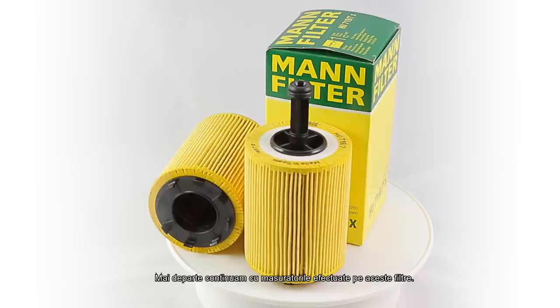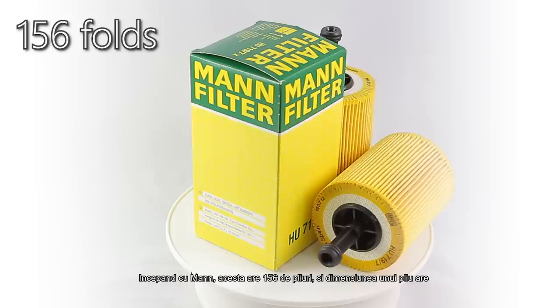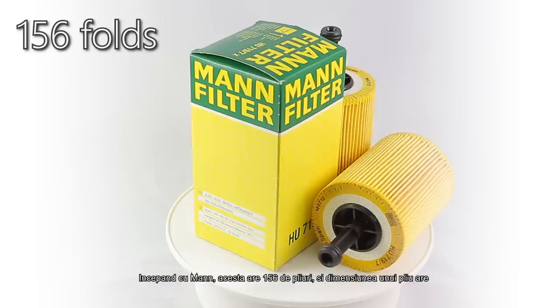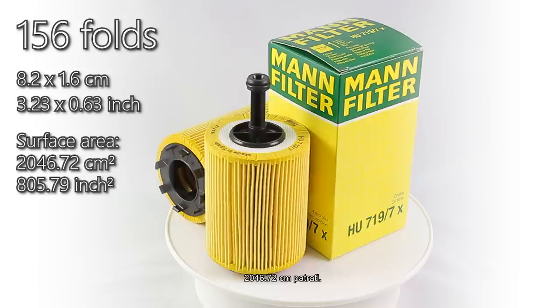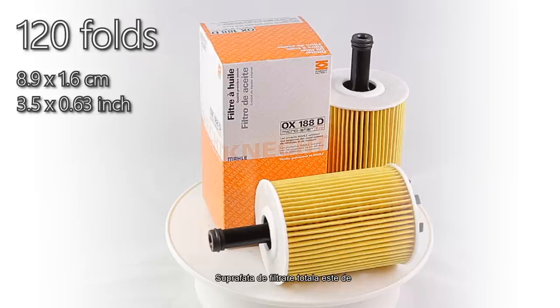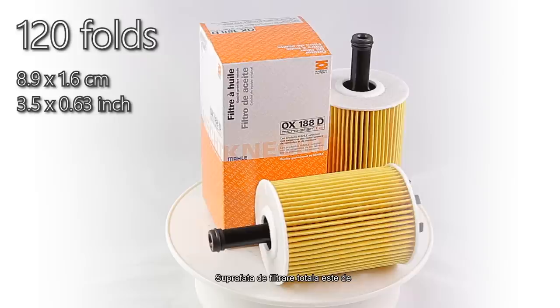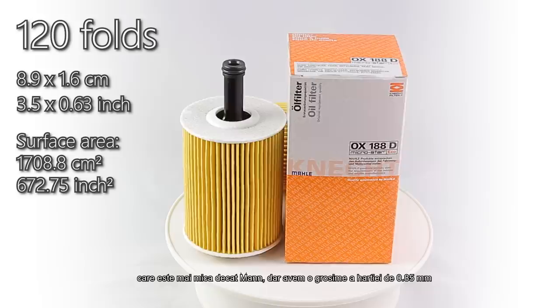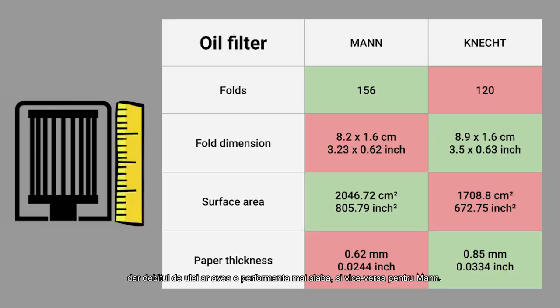Let's continue with the measurements performed on these filters. Starting with the MAN I've counted 156 folds and the dimension of one fold is 8.2 by 1.6 centimeters which give it a surface area of 2046.72 square centimeters. The paper thickness is 0.2 millimeters. Now for the Kinect. I've counted 120 folds which is less than MAN but the dimension of one fold is 8.9 by 1.6 centimeters larger than MAN because of the cap design. The total surface area measure of the Kinect filter is 1708.8 square centimeters which is less than the MAN but the paper thickness is 0.85 millimeters which is 0.23 millimeters thicker than MAN. This would mean that the Kinect filter would be better at trapping the particles in the media but we can presume that the flow would be affected and vice versa for the MAN.